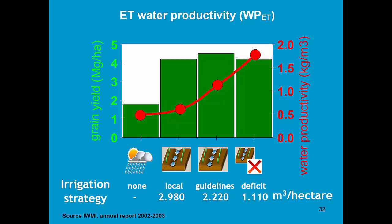If you plot the ET water productivity, you can see that it increases to close to 2 kilograms per cubic meter of water for deficit irrigation. So with half of the irrigation water, I can nearly get the same grain yield.